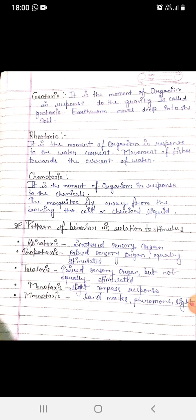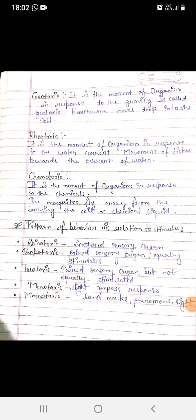For example, the mosquito flies away from the burning coil or chemical liquid. Regarding patterns of behavior in relation to a stimulus: klinotaxis involves scattered sensory organs, tropotaxis involves a pair of sensory organs equally stimulated.